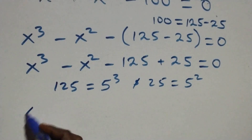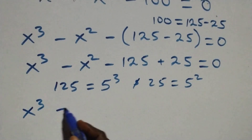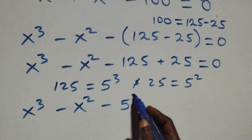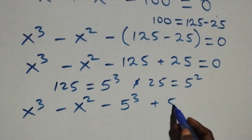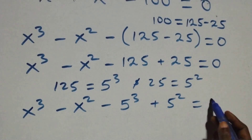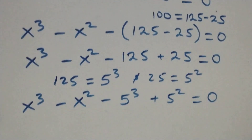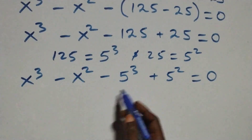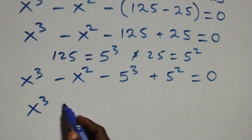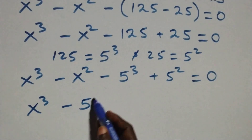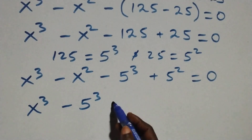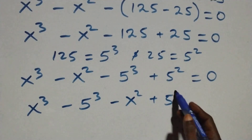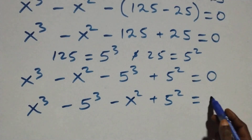Then what we have here becomes x cubed minus x squared minus 5 cubed plus 5 squared, then equals to 0 here. Then here we bring the power of 3 together: we have x cubed minus 5 cubed, and the power of 2 together we have minus x squared plus 5 squared, equals to 0 here.